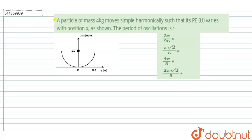Hello, welcome to Doubtnut. In this question, a particle of mass 4 kg moves simple harmonically such that potential energy U varies with position X. Then the period of the oscillation is?